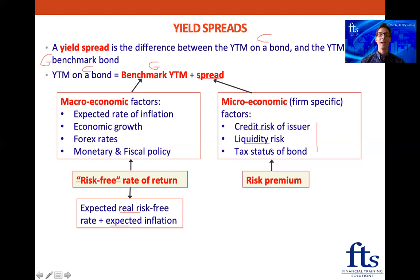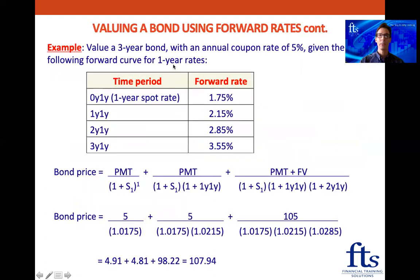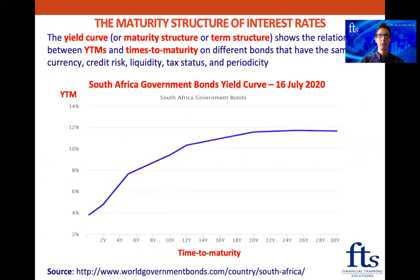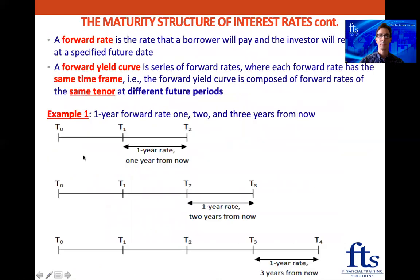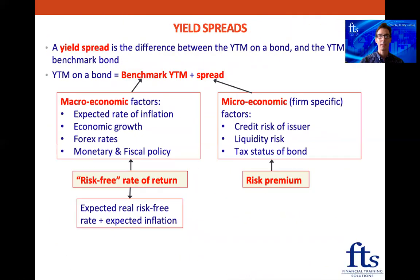Let's have a look at that example. If we remember back to the previous class when we looked at the yield curve, we looked at the 10-year South African government bond and we see its yield is about 9%. So if we're going to be looking at a 10-year corporate bond, we take the benchmark government 10-year yield of 9%, add an extra 2% because the company is more risky than the government, so the yield on that 10-year corporate bond would be 11%.